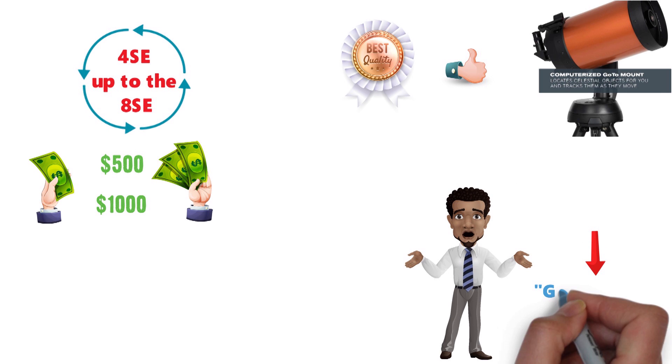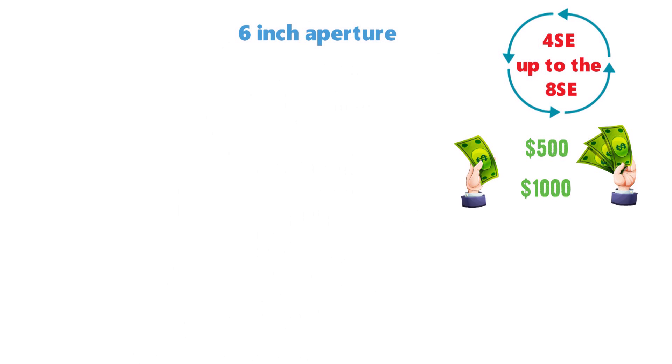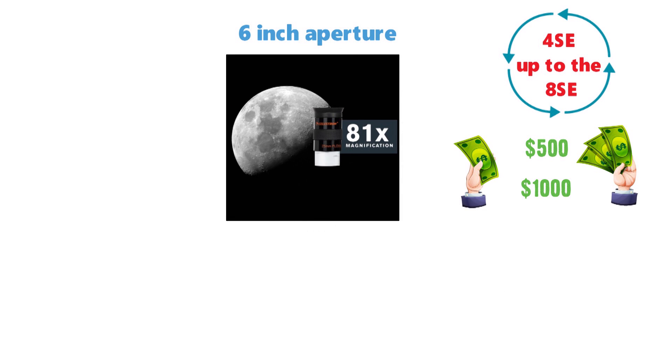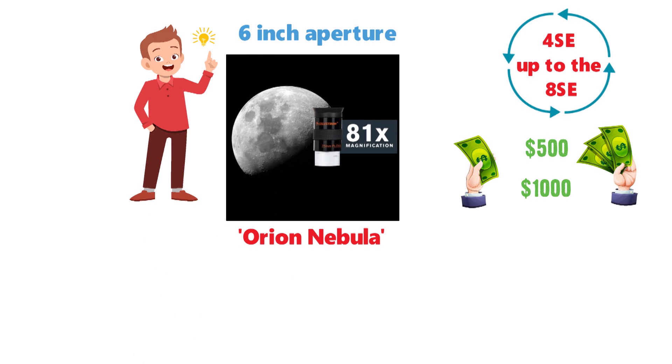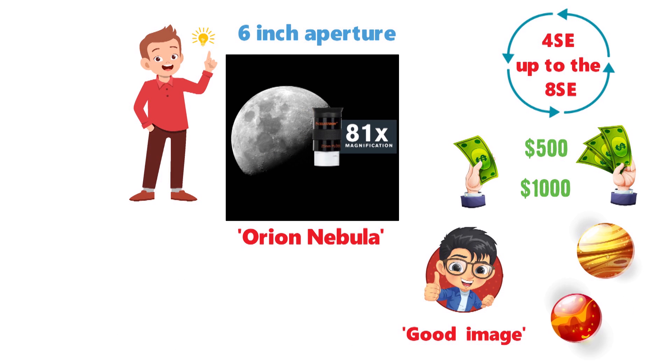The 6-inch aperture is ideal for seeing objects that are really far in the distance, like the Orion Nebula, which is one of the best things to start with if you're a beginner. You'll be able to get some really good images of different planets as well.